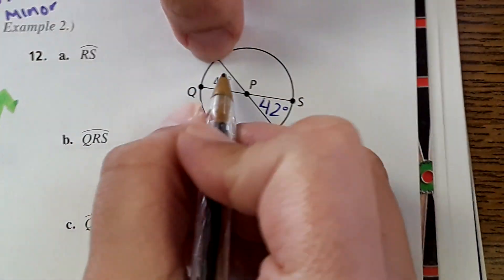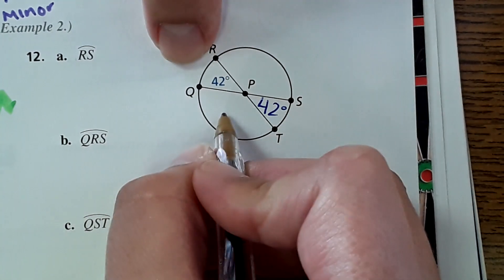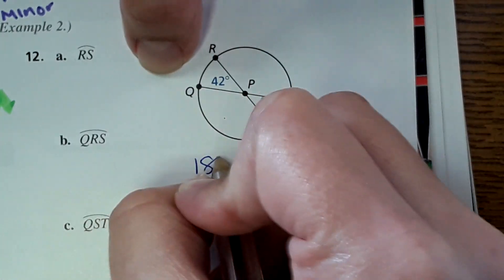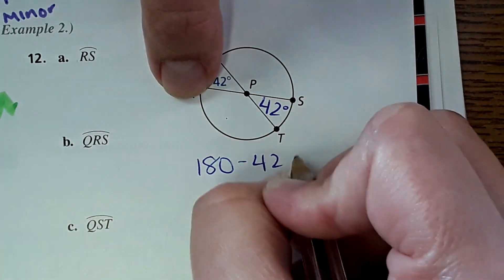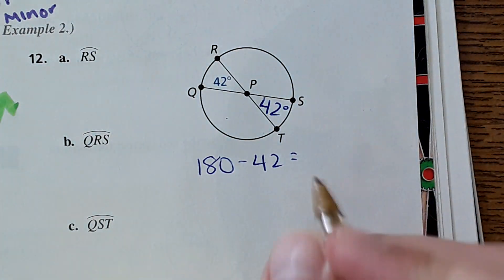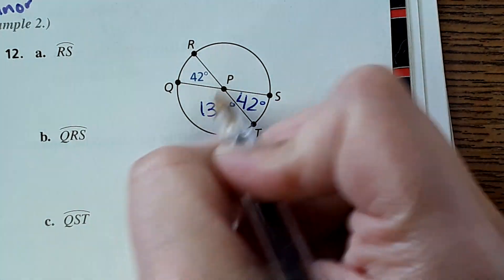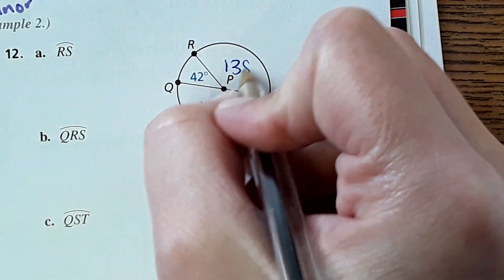Remember vertical angles are congruent, so if this is 42 then this is 42. And then you can see that this is a diameter, so these two angles would add to 180 degrees. So we can do 180 minus 42 to find out this angle and it is 138 degrees, and then of course vertical angles are equal so 138 here as well.